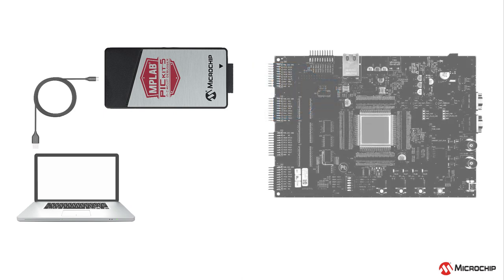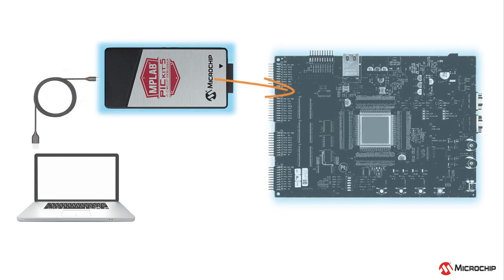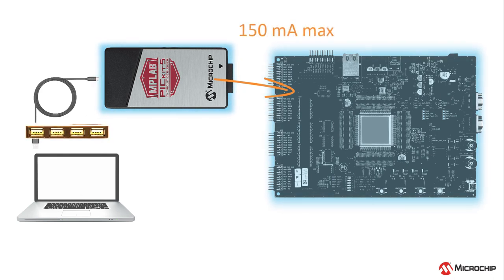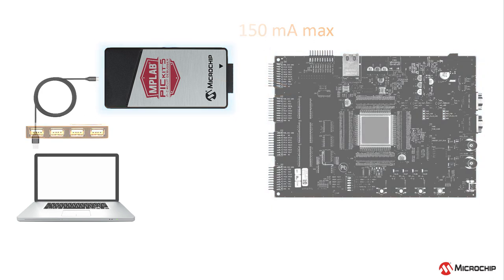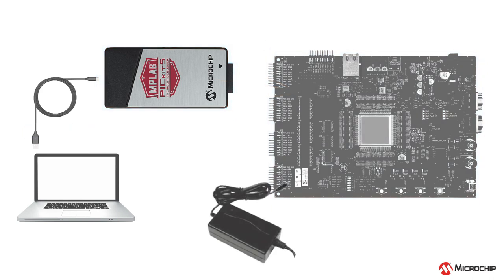The PICkit-5 is powered through its USB connection to the host computer. It can power the target board if the debugger is connected through an externally powered hub, and the target consumes no more than 150 milliamps. The alternative is to power the target board from its own supply.